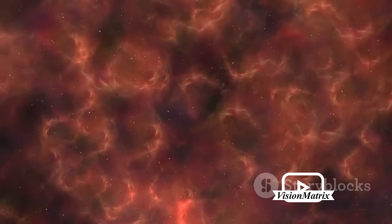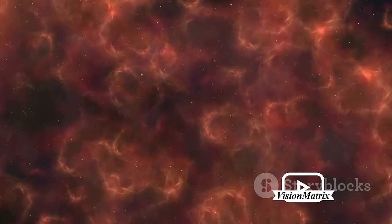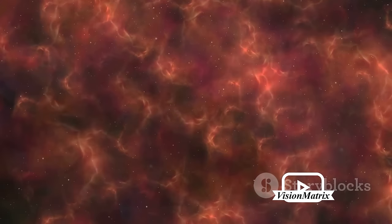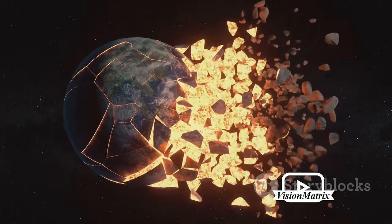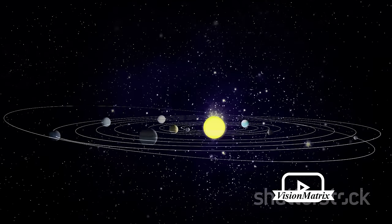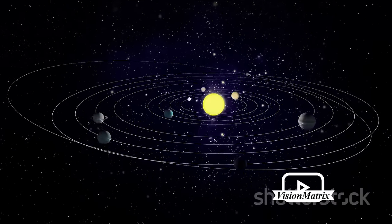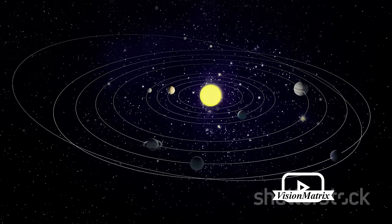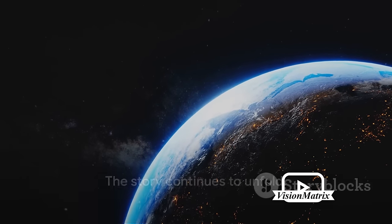Around this newborn star, remnants of the protoplanetary disk continue to whirl and collide, gradually coalescing into planetesimals. Over millions of years, these planetesimals collide and merge, growing into full-fledged planets. Their gravity clears their orbit, sweeping up remaining debris and defining their place in the solar system. But the story doesn't end here. Even after a solar system forms, it continues to evolve.